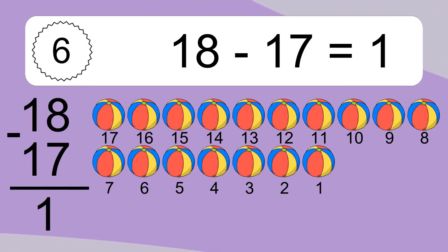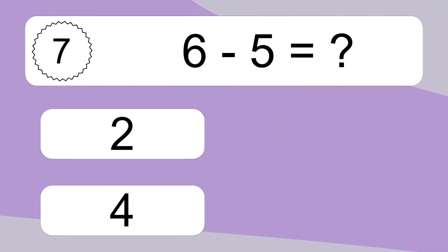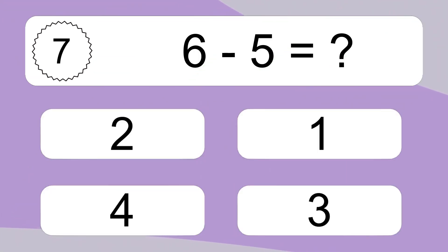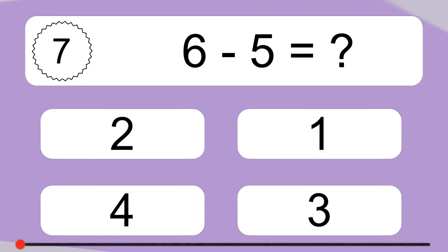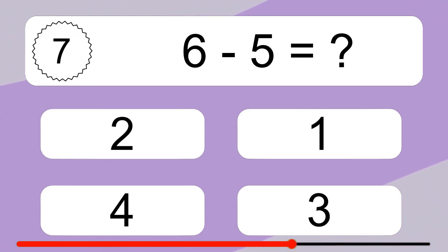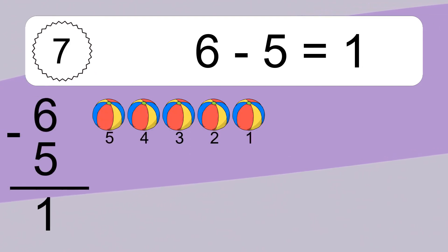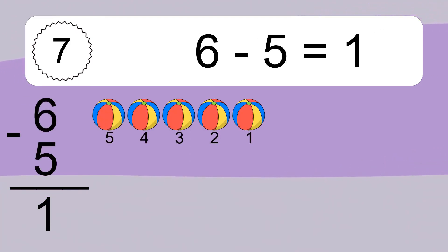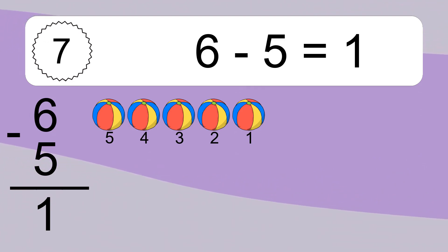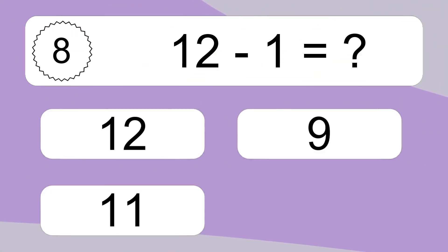6 minus 5 equals what? 6 minus 5 equals 1. Let's count it: 5, 4, 3, 2, 1.